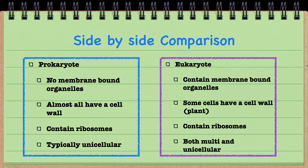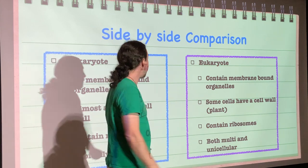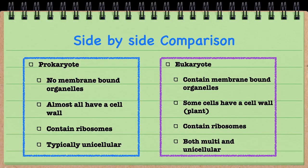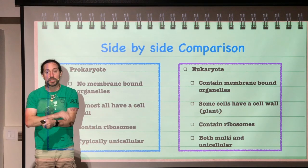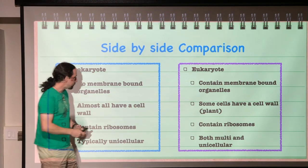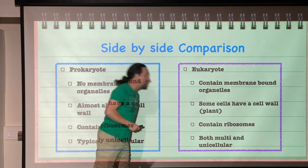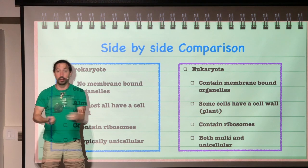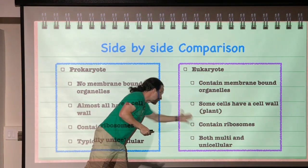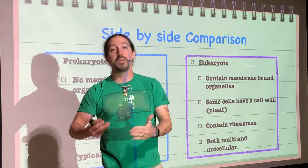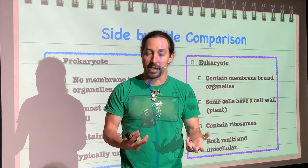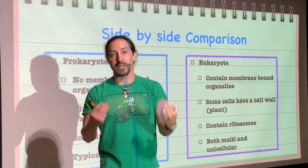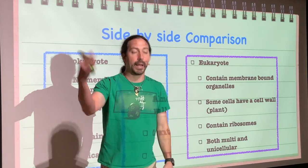Eukaryotes do have internal membranous compartments called organelles — membrane-bound compartments made of phospholipids. Some have a cell wall — plant cells, for example, have one, while animal cells like our own do not. Eukaryotes also contain ribosomes, which are clearly important for life since they're found in both prokaryotes and eukaryotes. Eukaryotic organisms exist both in unicellular and multicellular forms — animals and plants are multicellular examples.